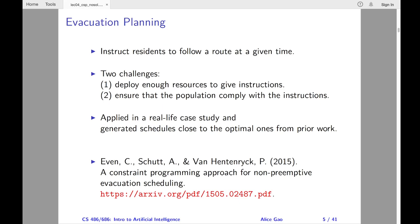Take evacuation planning as an example. Evacuation planning is critical in preparing and responding to natural and man-made disasters. In a controlled evacuation, agencies must instruct each endangered resident to follow a specific evacuation route at a given departure time. There are two main challenges: first, we must deploy enough resources to give instructions to the endangered population. Second, we must ensure that the endangered population comply with the evacuation orders.